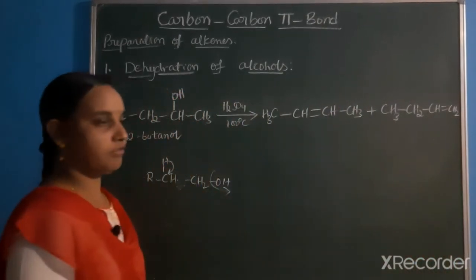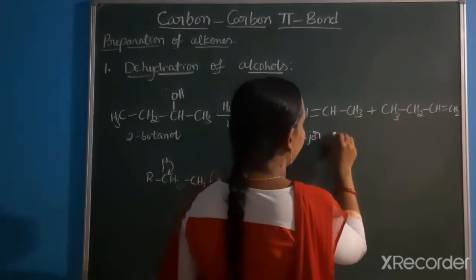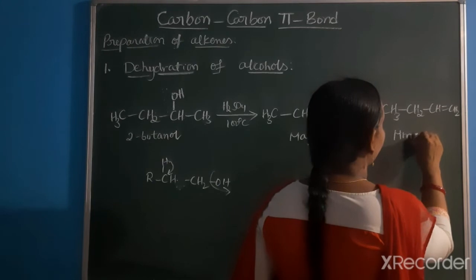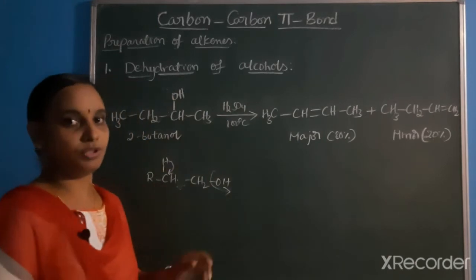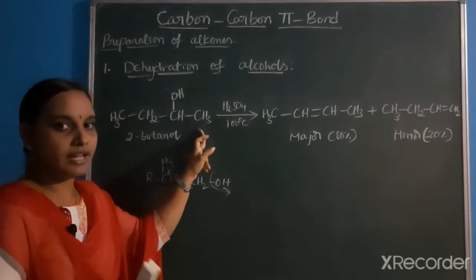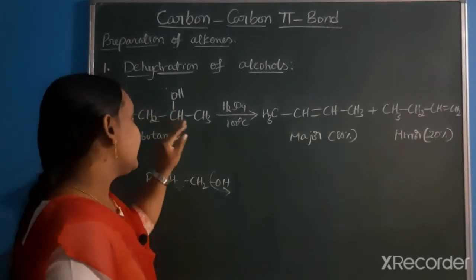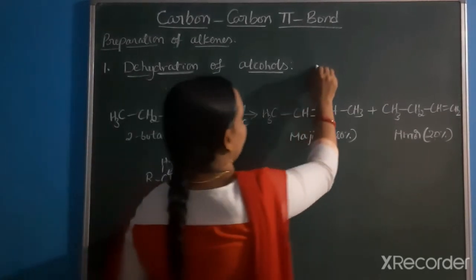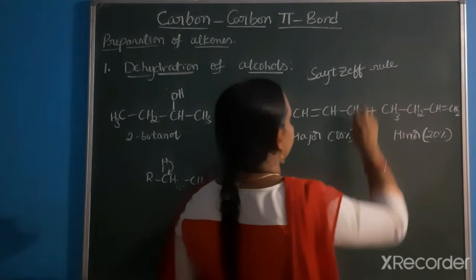We get two products from this reaction. One is the major product at 80% and the other is the minor product at 20%. The major product is the more stable one. To determine which is more stable, we apply the Saytzeff rule - hydrogen is preferentially eliminated from the adjacent carbon.